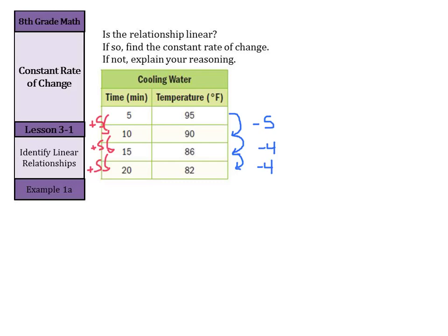So if I look at my first rate of change here, we have from 90 minus 95 to 10 minus 5, which got us this negative 5 over 5, which got us just 1 degree Fahrenheit per minute.